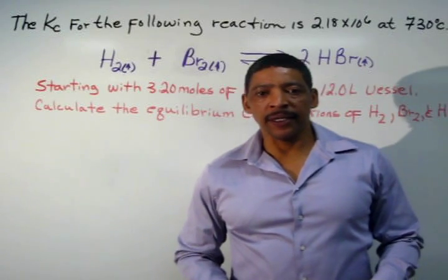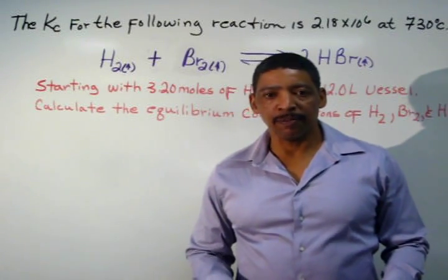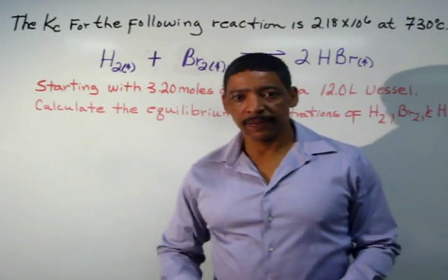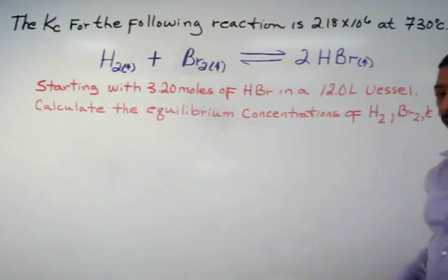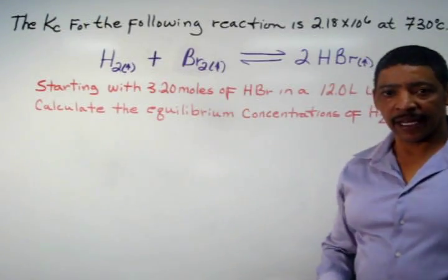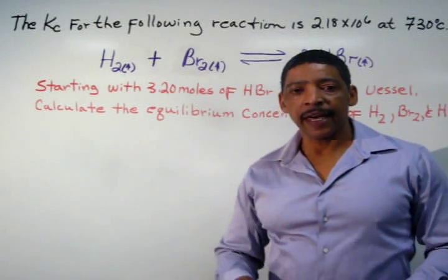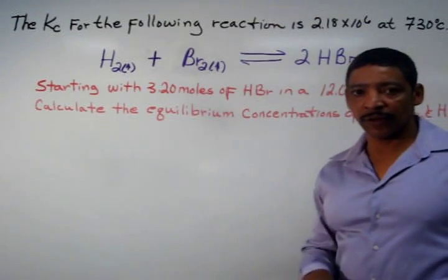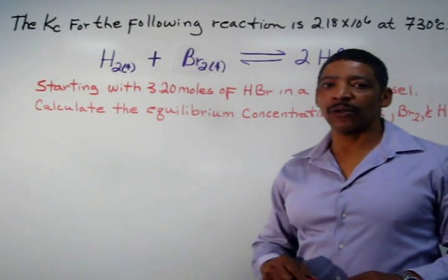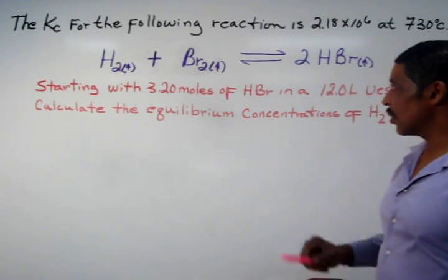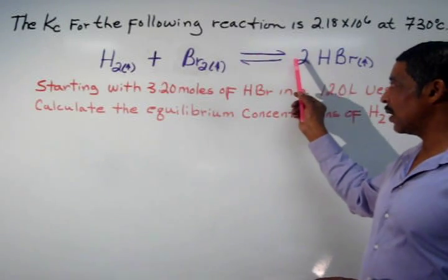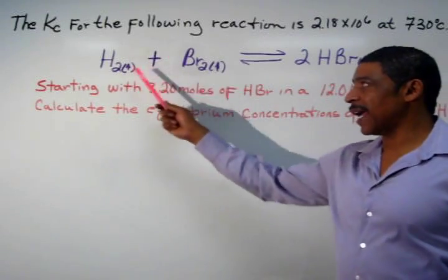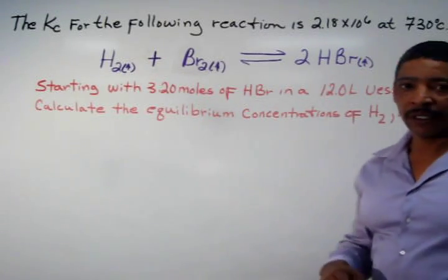Before continuing with the calculation, let's review some basic concepts associated with a reaction that is in equilibrium. The double arrows in this reaction indicate that the reaction is reversible. At equilibrium, the forward reaction rate is equal to the reverse reaction rate. Do not confuse rate with amounts — although the forward rate is equal to the reverse rate, that does not imply that the amount of reactant is equal to the amount of product.